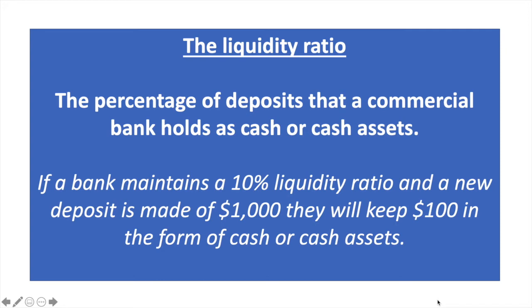If a bank maintains a 10% liquidity ratio and a new deposit is made of $1,000, they will keep $100 in the form of cash or cash assets. They can use the remaining $900 only to make new loans.